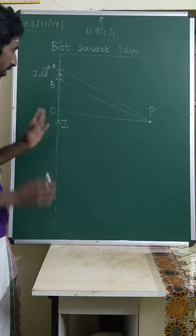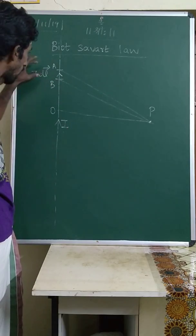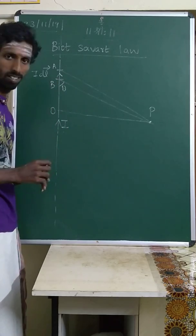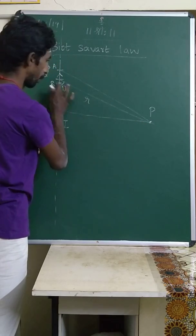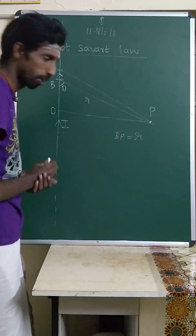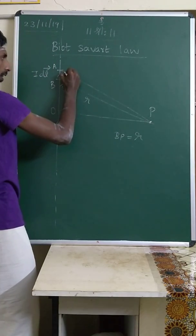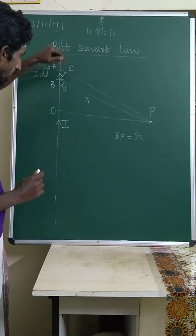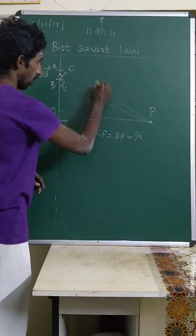This is an infinite wire carrying a current i. In the current-carrying wire I am going to consider a small current element i·dl vector. This is the angle θ, which is the angle between the current element and the distance. Let us assume the distance from B to P: BP is equal to r. Similarly, I am drawing a line perpendicular to this, marking this point as C, so CP is also equal to r.